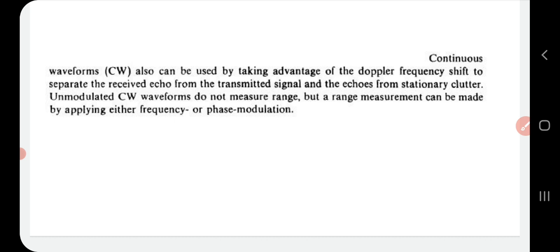Continuous waveforms (CW) can also be used by taking advantage of the Doppler frequency shift to separate the received echo from the transmitted signal and the echoes from stationary clutter. Unmodulated CW waveforms do not measure range, but range measurement can be made by applying either frequency or phase modulation.